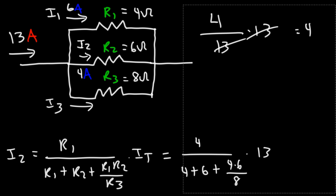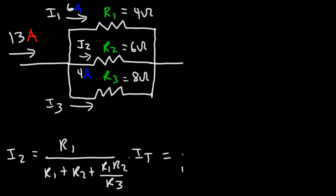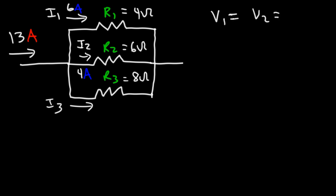And now let me show you the other way of getting that answer. You need to understand that whenever you have resistors connected in parallel with each other, the voltages across those resistors are the same. So V1, the voltage across R1, is the same as V2 and V3.